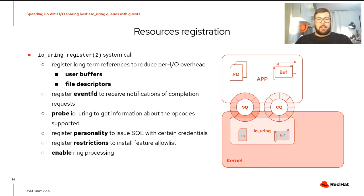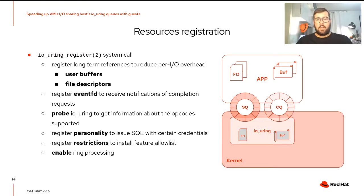For each request, the kernel must take an internal reference to the file pointed by the file descriptor and release it when done. It also needs to map and unmap user buffers in kernel virtual memory for every request. To reduce this overhead, if the application has a set of file descriptors and user buffers used very often, we can pre-register them with IOUring register and use an index in the SQE. This system call can also register an eventfd to receive notifications when requests are completed, probe supported opcodes, or register personalities to issue SQEs with certain credentials.